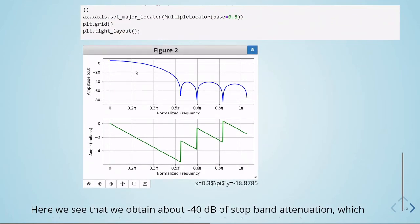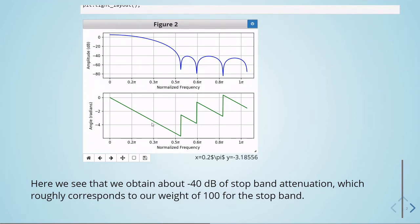So we can see that there is an attenuation here. Here is the pass band, and then we have the stop band, and here is the frequency. Here is our normalized frequency from zero to pi, which is the Nyquist frequency. So here we see that we obtain about minus 40 dB in the stop band, which roughly corresponds to our weight of 100 for the stop band.